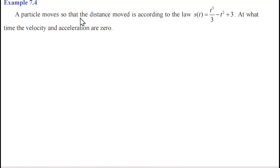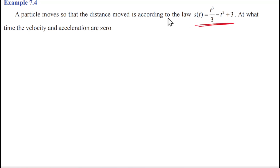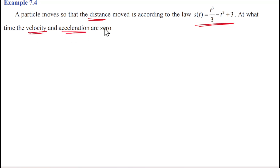A particle moves so that the distance moved is according to the law s(t) = t³/3 - t² + 3. At what time are the velocity and acceleration equal to 0?